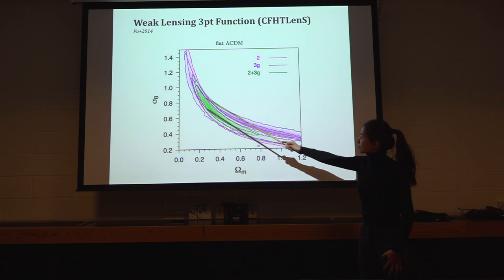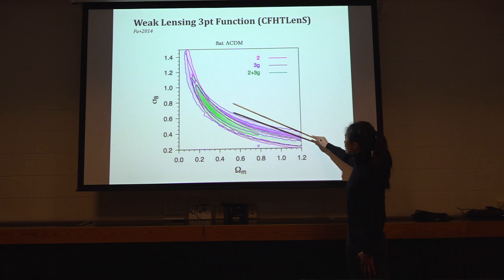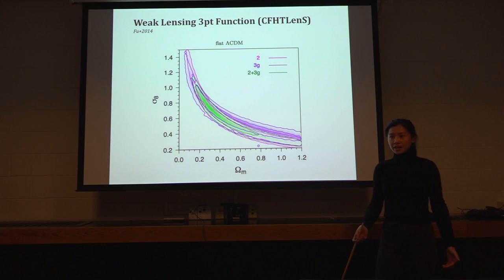This is sigma-8 and the omega-m, and the two-point is this one, and the three-point is really hard to see, but the point is three-point can give you similar constraint as the two-point correlation function, and it's doable.